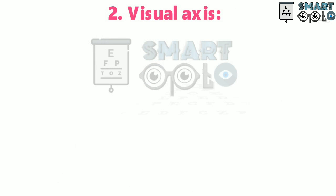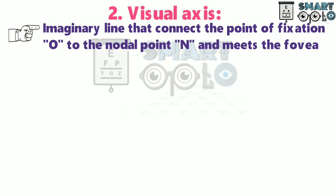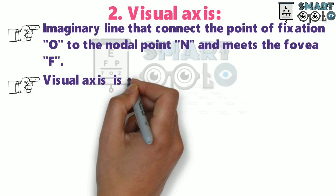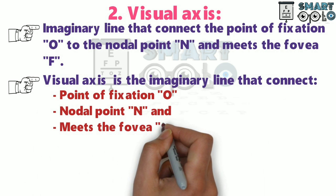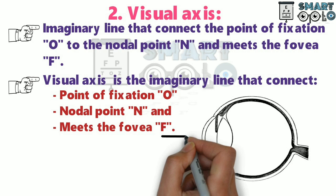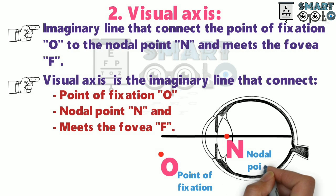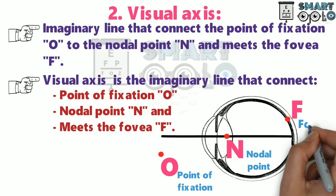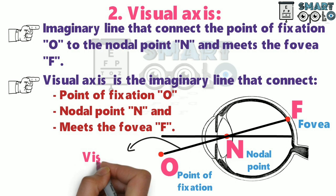The second point is about visual axis. The visual axis is an imaginary line that connects the point of fixation O to the nodal point N and meets the fovea F. In this diagram, this is the optical axis. This point represents the point of fixation, this point represents the nodal point, and this is the fovea. The line that connects the point of fixation O to the nodal point N and fovea F is known as the visual axis.